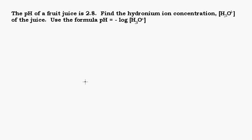We're going to look at a quick example here of a story problem that uses logs. This problem says the pH of a fruit juice is 2.8. Find the hydronium ion concentration, which is H3O plus of the juice.